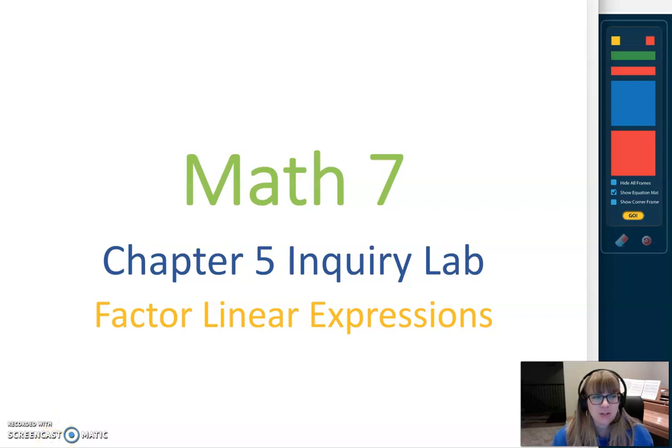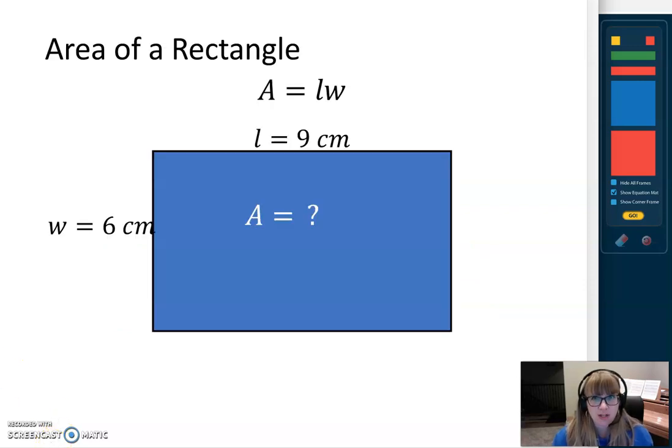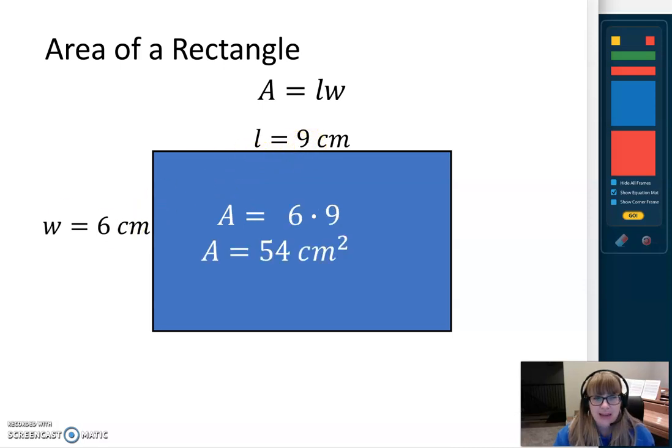Before we start with the lesson, I want to do a brief review of what it means when we're finding the area of a rectangle. The area of a rectangle can be found by multiplying the length by the width. So I've got this beautiful rectangle here. The length is 9 centimeters and the width is 6 centimeters. We would simply multiply the length and the width and we would get 6 times 9, which is 54 centimeters squared.